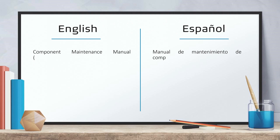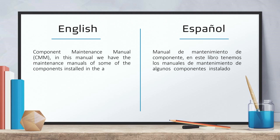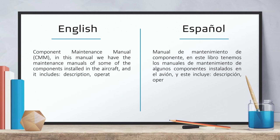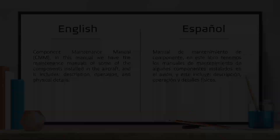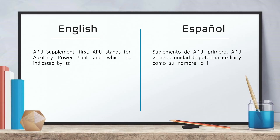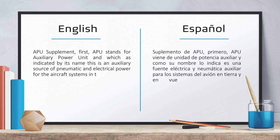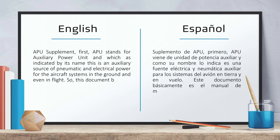Component maintenance manual. In this manual, we have the maintenance manuals of some of the components installed in the aircraft, and it includes description, operation and physical details. APU supplement. APU stands for Auxiliary Power Unit, which as indicated by its name, is an auxiliary source of pneumatic and electrical power for the aircraft systems on the ground and even in flight. So this document is basically the APU maintenance manual.